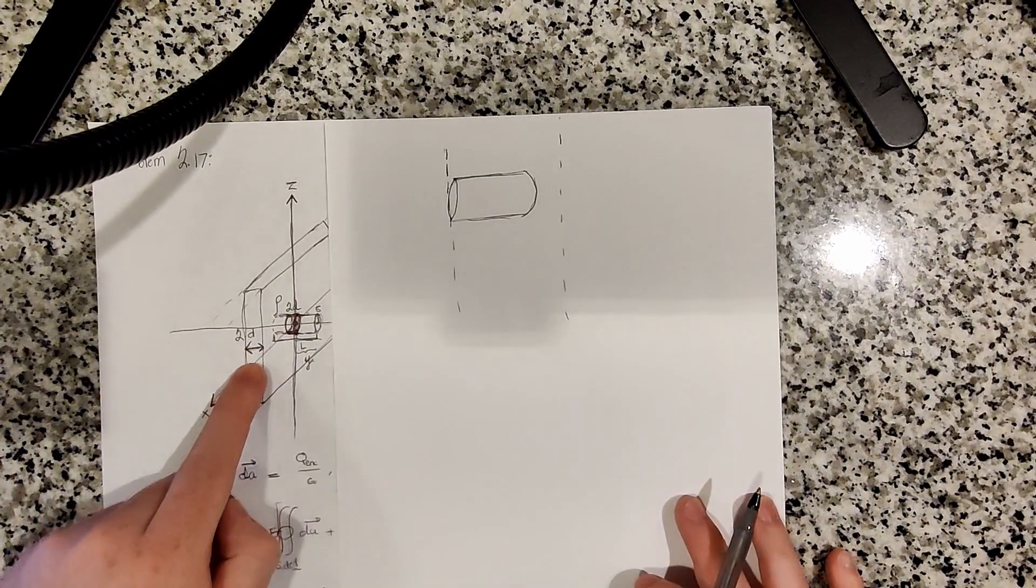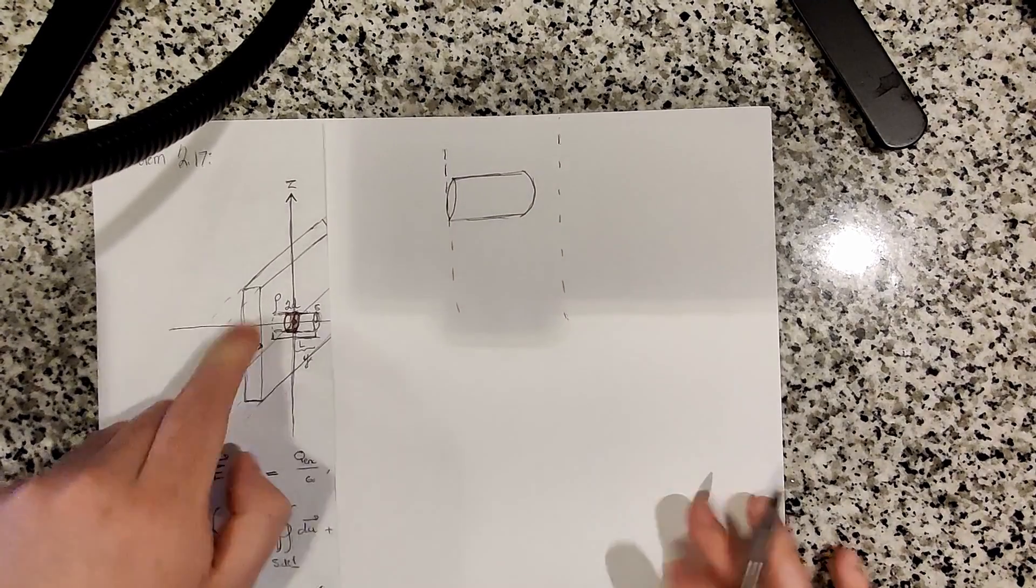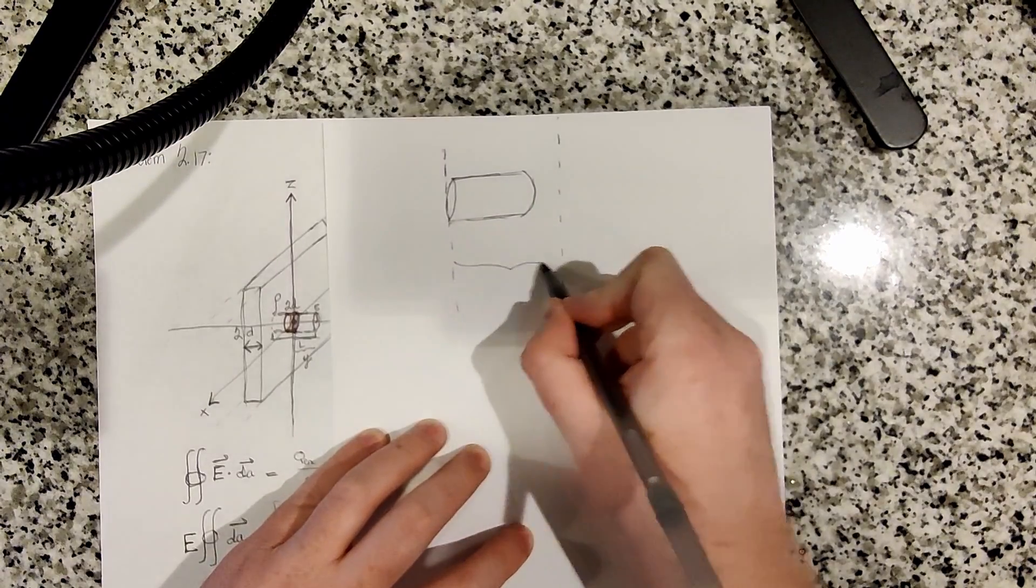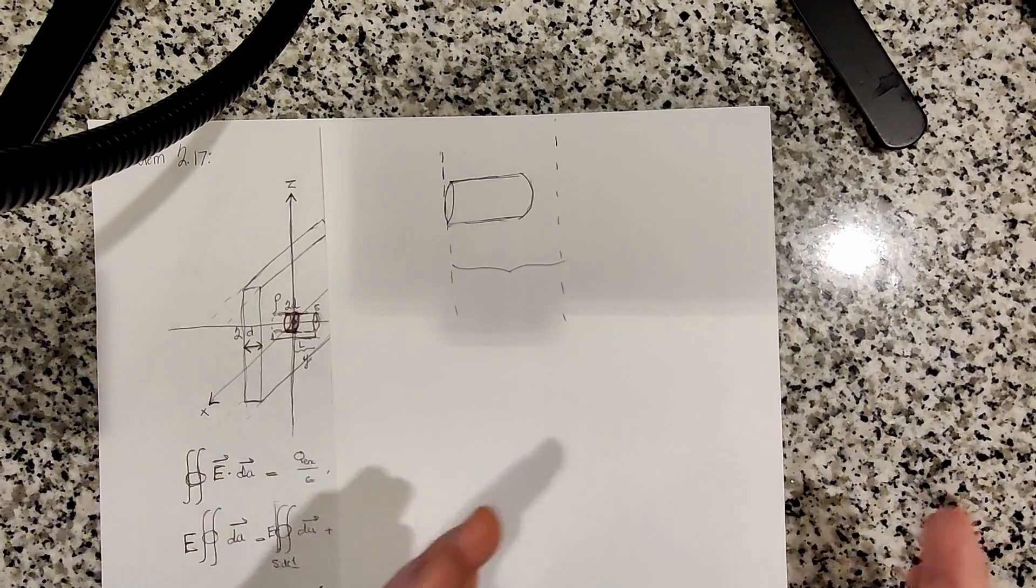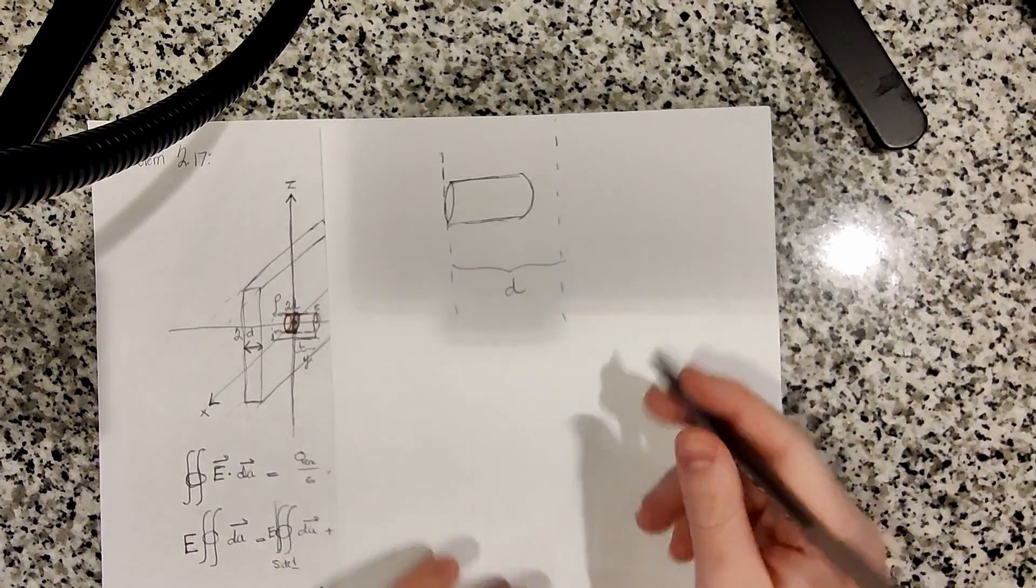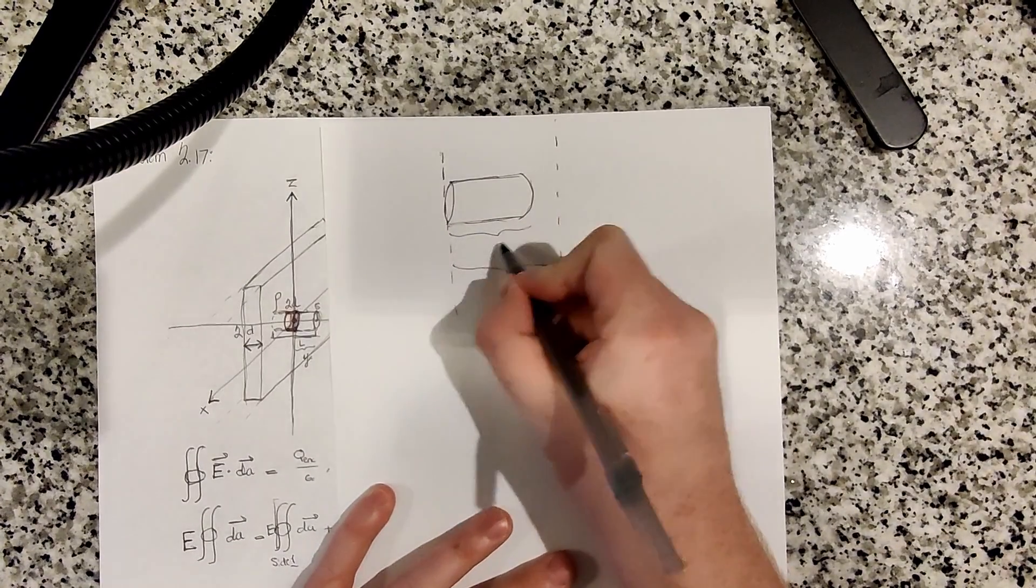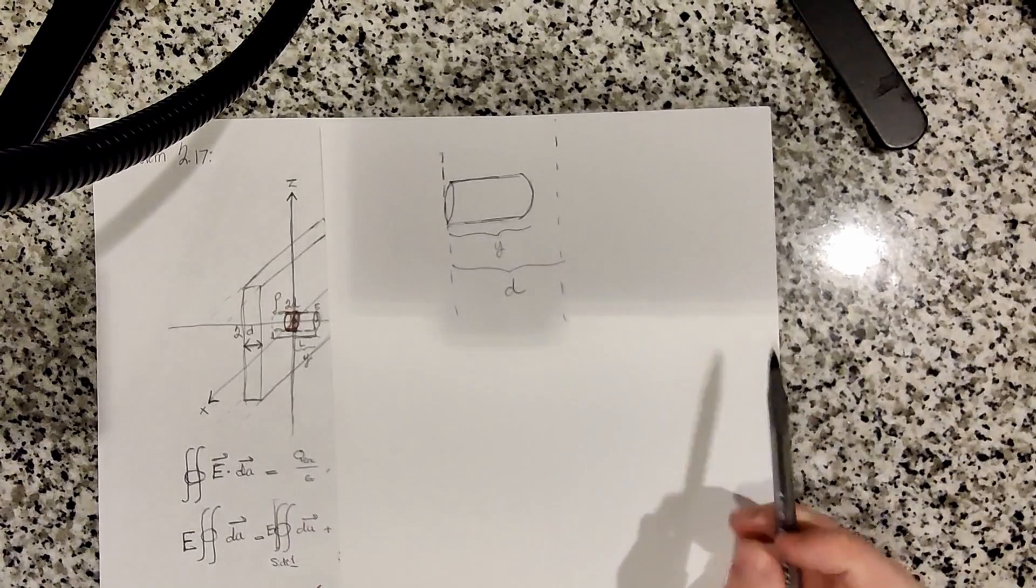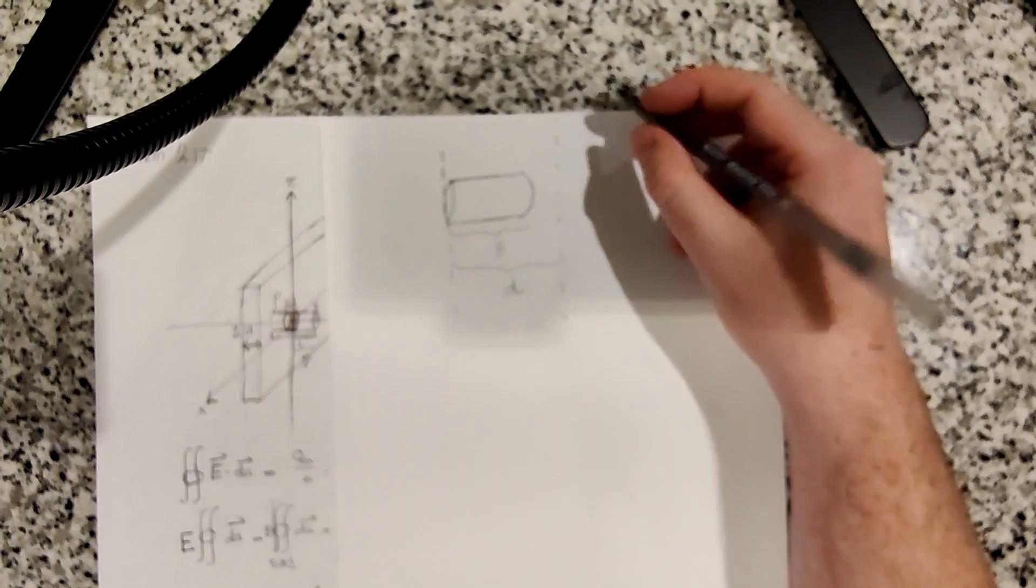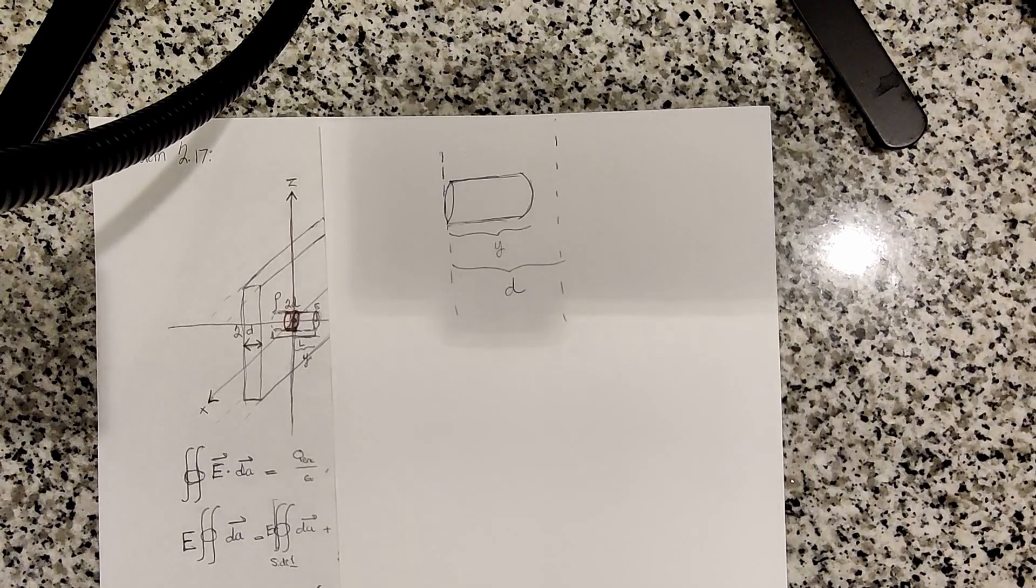Remember, the thickness of the slab is 2d, which means this distance, one half of the side of the slab if our slab is centered, would just be d. And then we'll call the length of our Gaussian surface here y, which is a variable distance. Okay, so we know that the charge density is uniform.